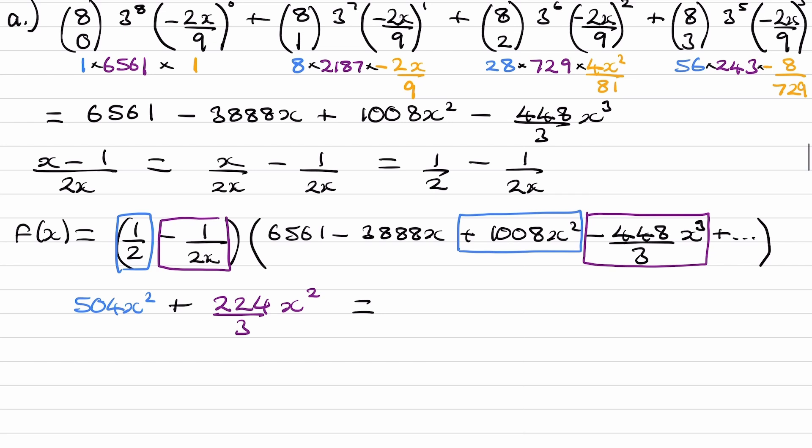Add the two things up, and we get 1736/3 x². So our answer, we just want the coefficient, would be 1736/3.